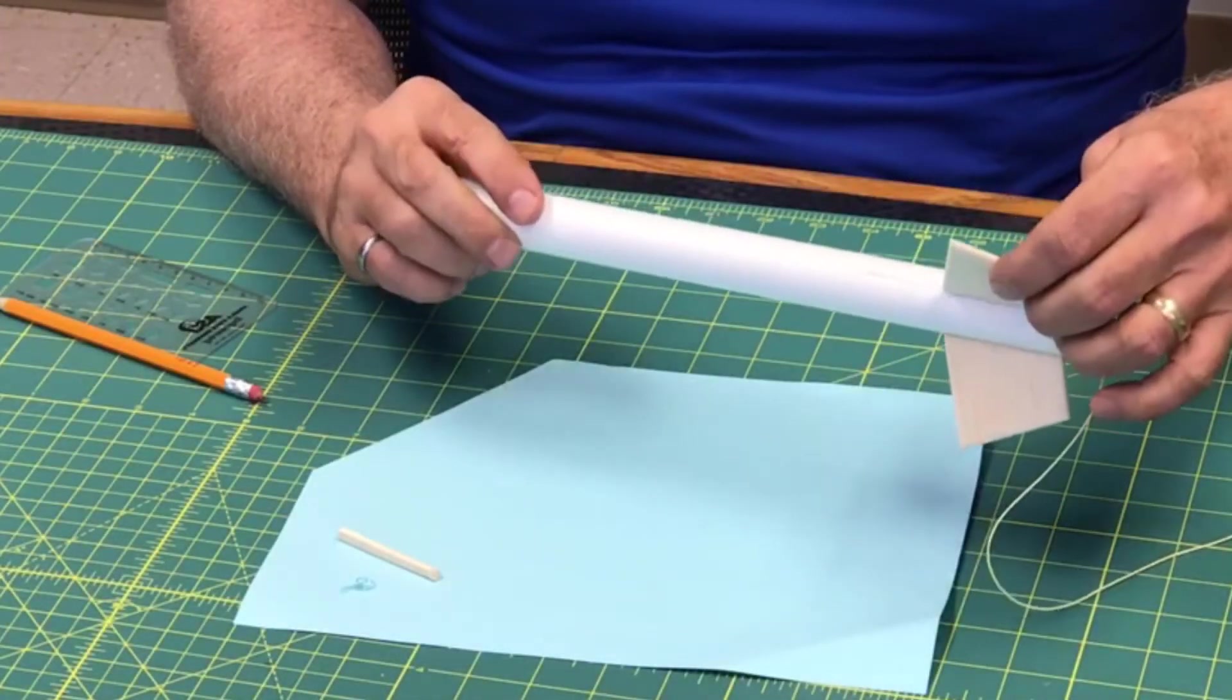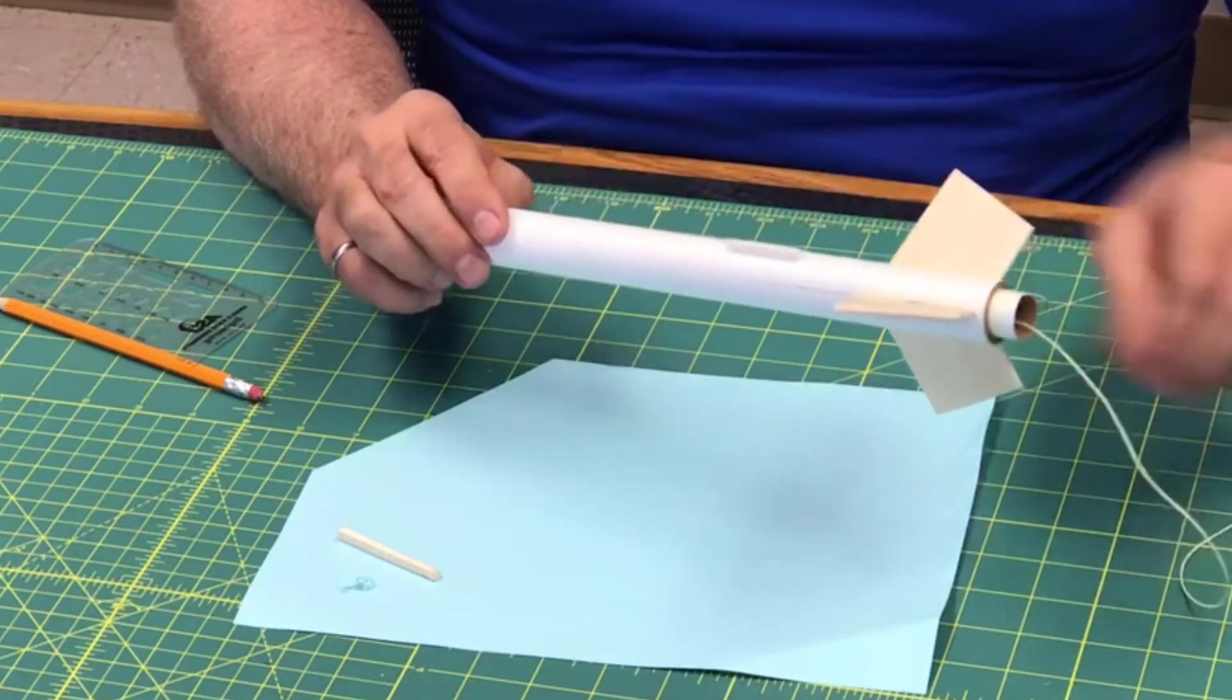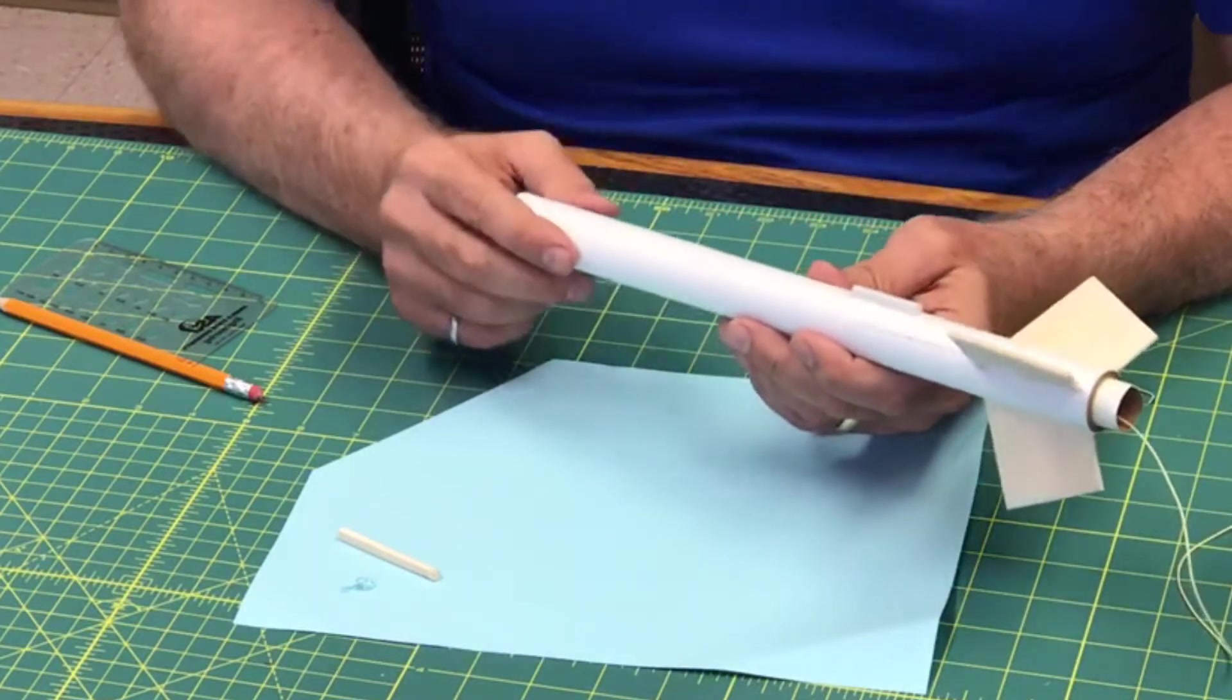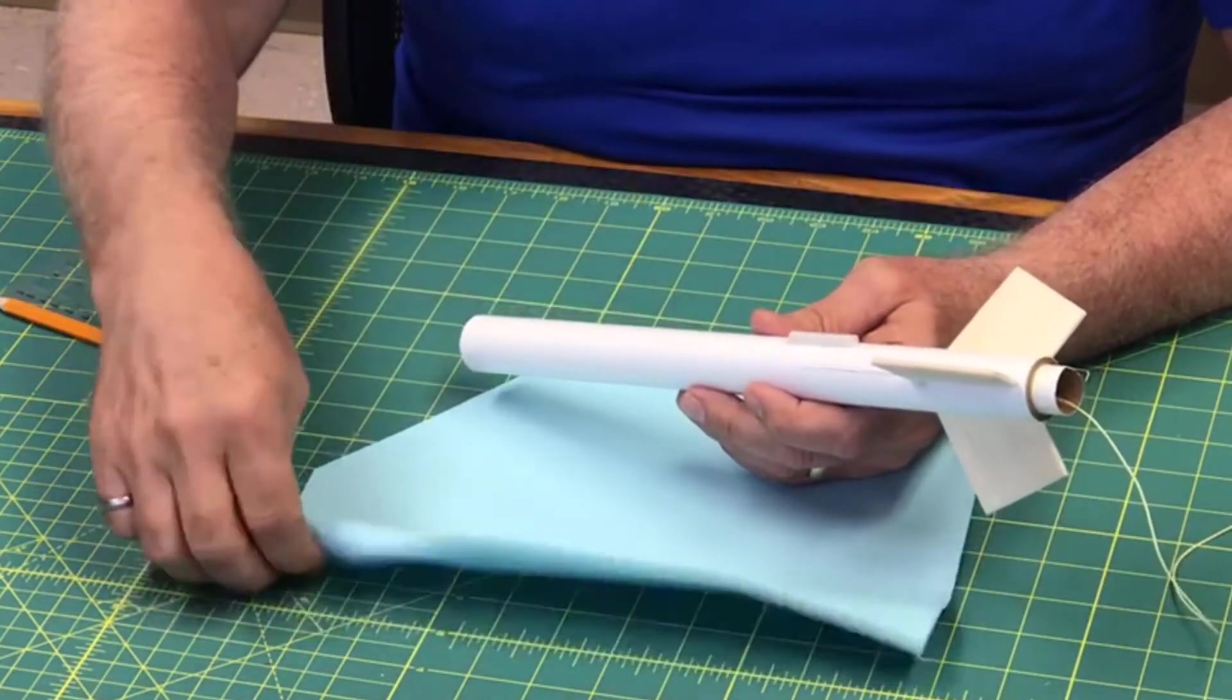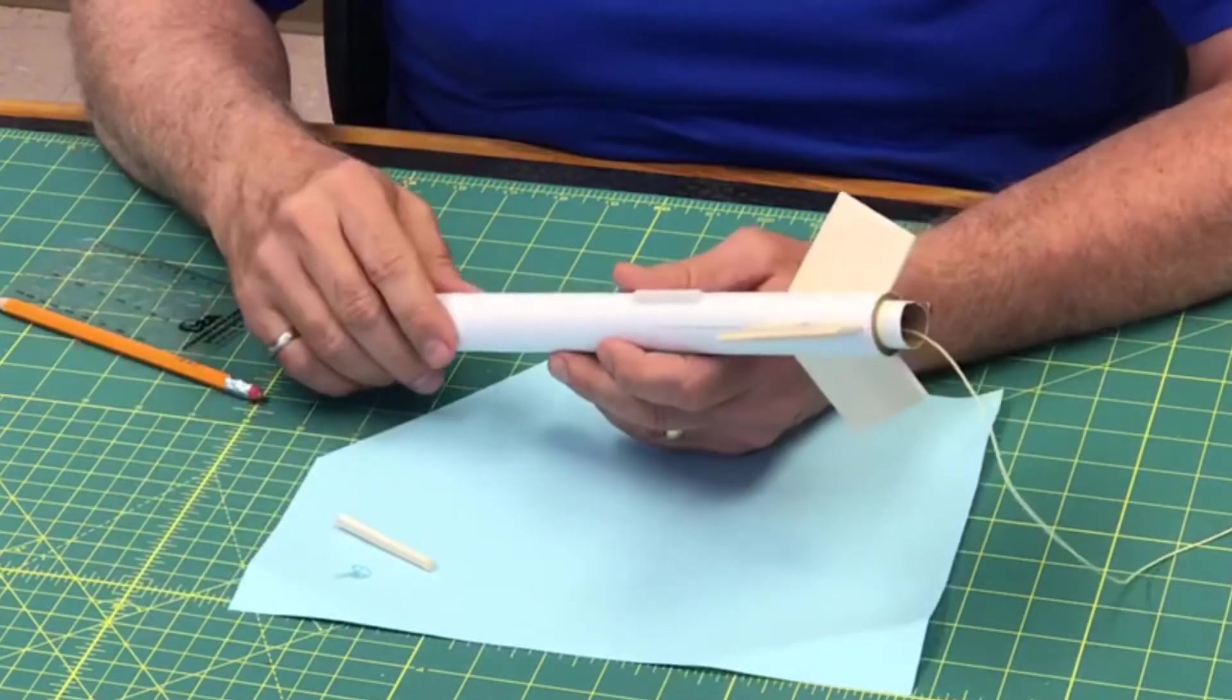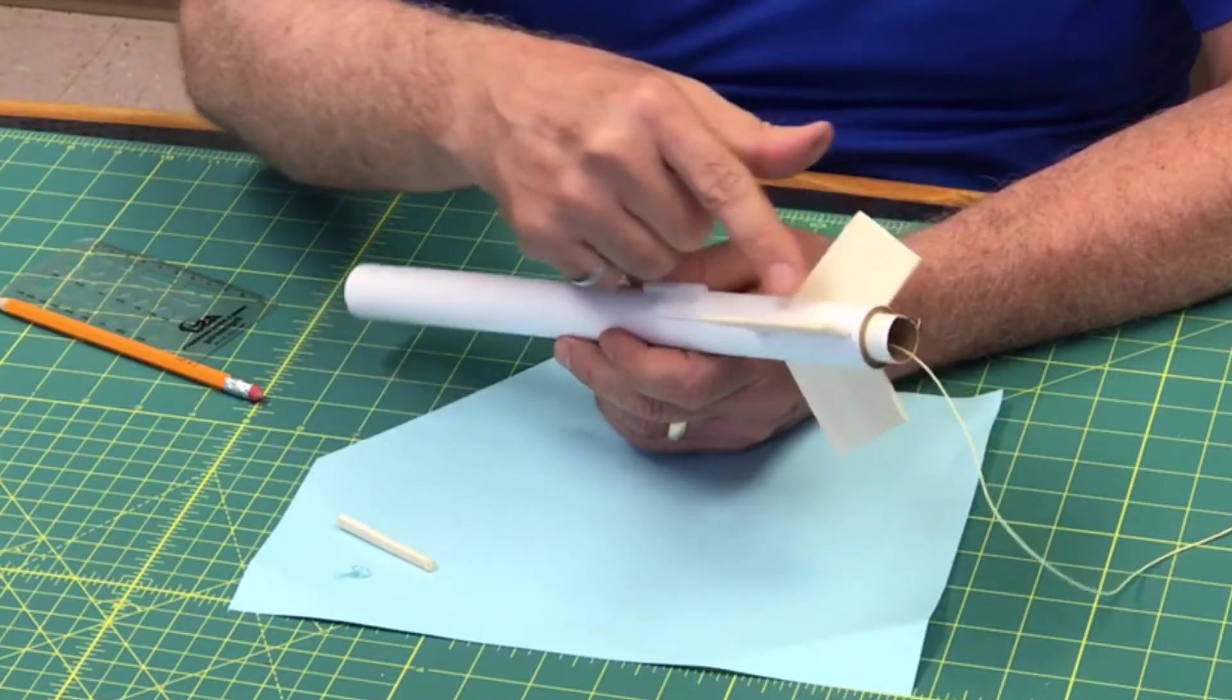Okay, I have my fins glued on with the CA glue and I have my launch lug glued on with the CA glue, but that's not the glue we're going to depend on to make it really strong. That's going to stick it on there, but although they call it super glue, it's really not that strong. What we want to do to make sure that it's really strong is we're going to put a fillet of glue.